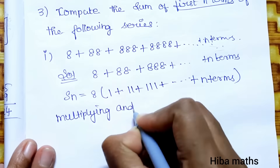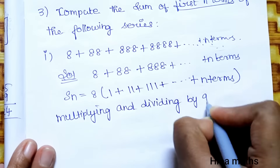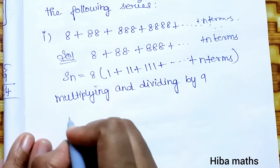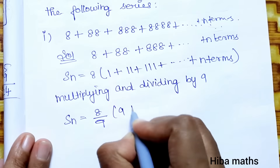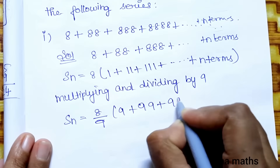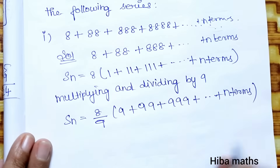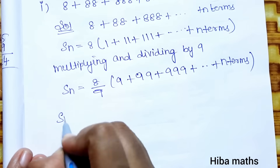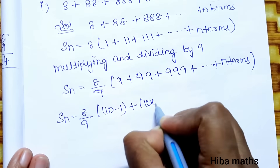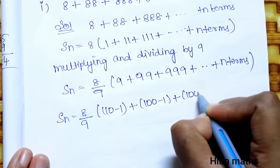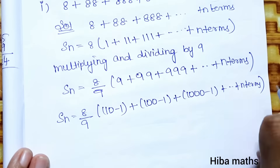Multiplying and dividing by 9, we get (8/9) times (9 + 99 + 999 + ... up to n terms). We rewrite each term: 9 = 10 − 1, 99 = 100 − 1, 999 = 1000 − 1, and so on up to n terms.